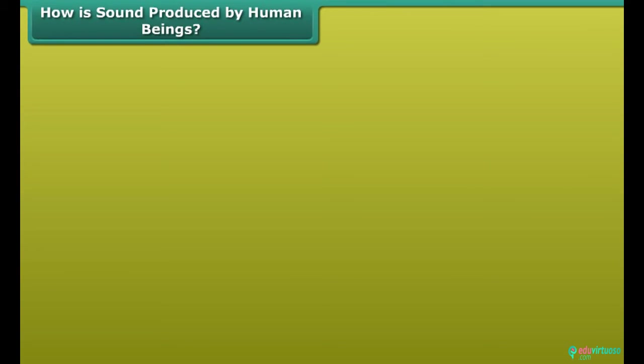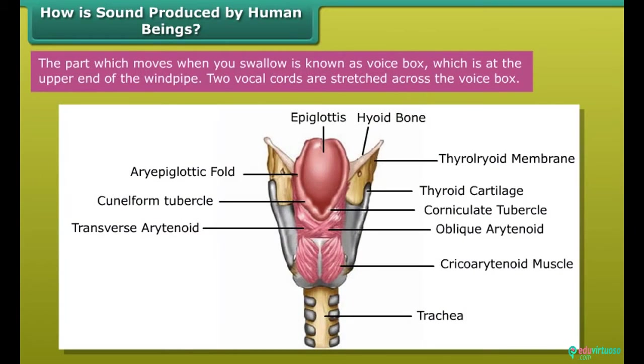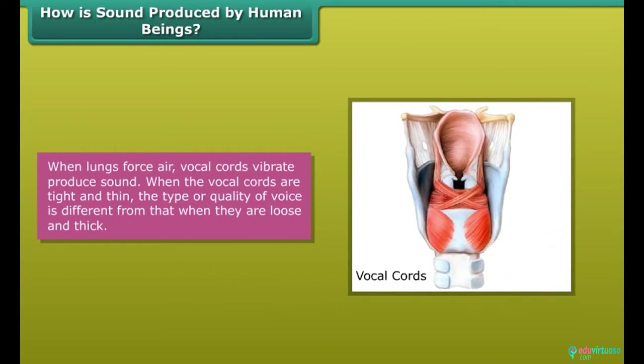How is sound produced by human beings? Voice box in human. Sound is produced by the voice box or the larynx in humans. The part which moves when you swallow is known as voice box, which is at the upper end of the windpipe. Two vocal cords are stretched across the voice box. When lungs force air, vocal cords vibrate, producing sound. When the vocal cords are tight and thin, the type or quality of voice is different from that when they are loose and thick.